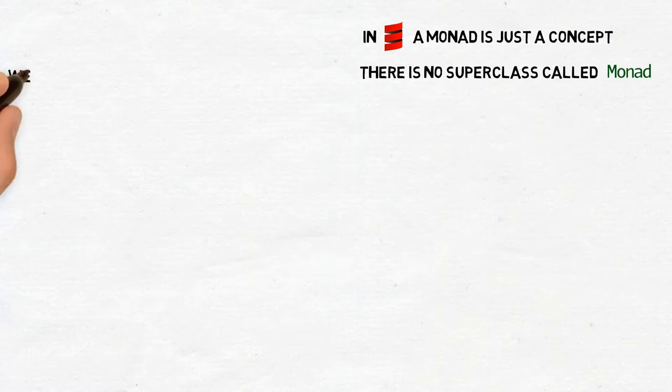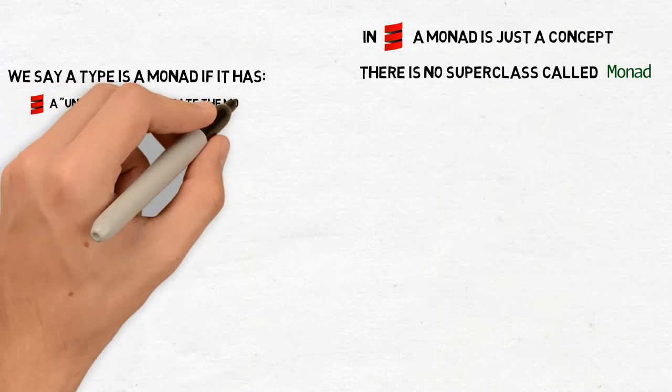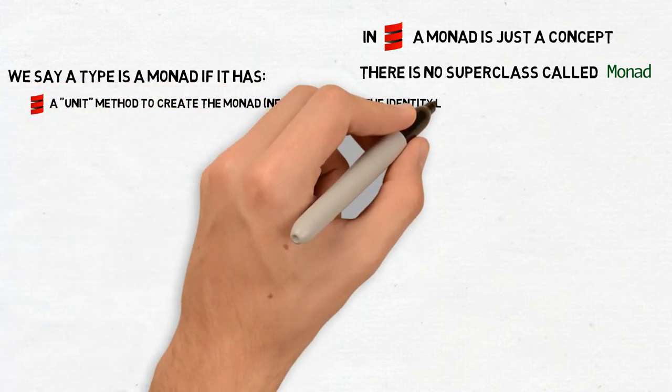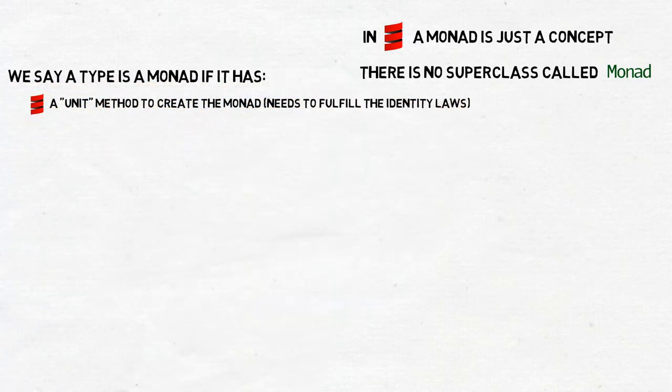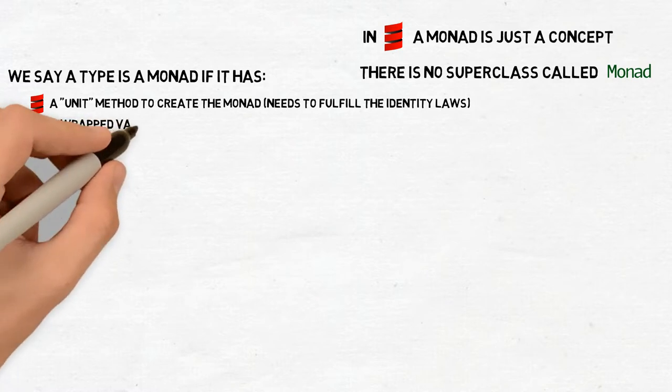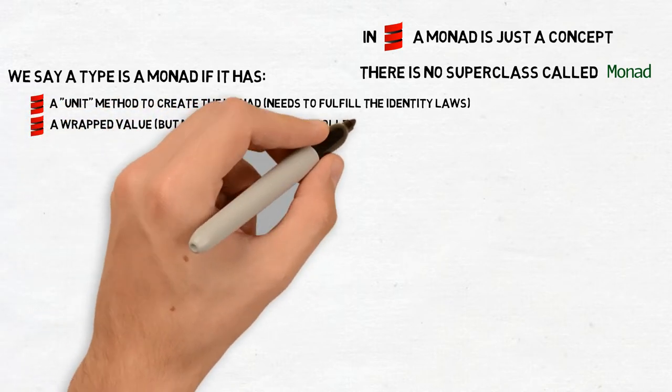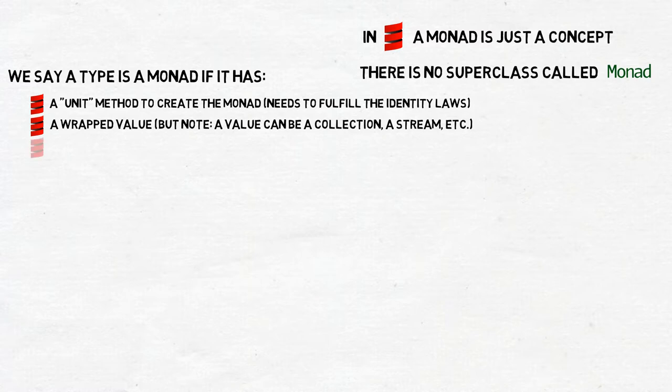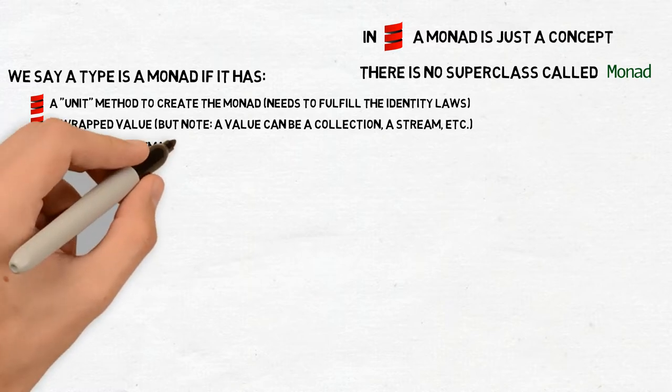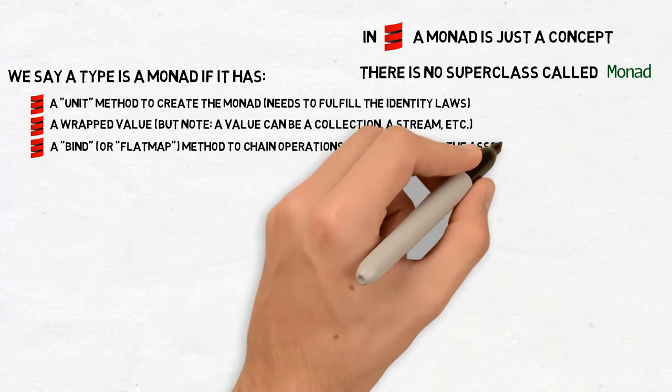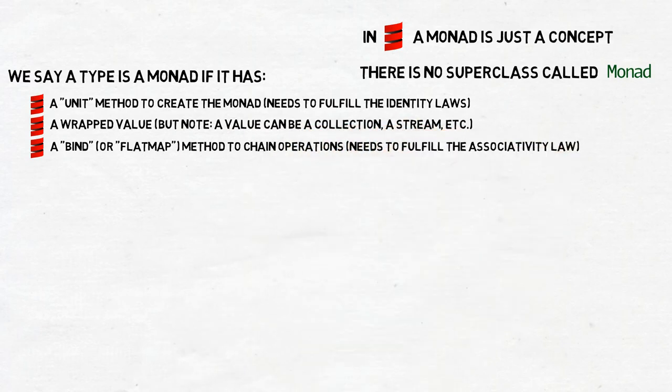A monad basically is any wrapper class which has a static method, unit. And please note, this is a popular name for the method, it's not the unit type. And that method accepts an element and creates a monad with the element inside. And it also needs to implement flatmap, enabling us to chain operations on the monad.